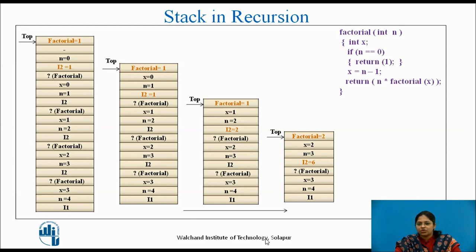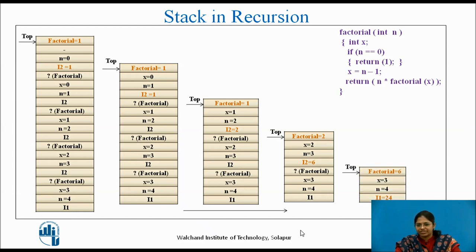After the next recursion call has been completed, factorial 2 and the number n equal to 3 are multiplied, and the return value is equal to 6. After the last recursion call has been completed, factorial 6 and the number n equal to 4 are multiplied, and the return value is 24. So you can see that i1 is equal to 24, which is the final value returned to the main function — the result for the factorial of 4.